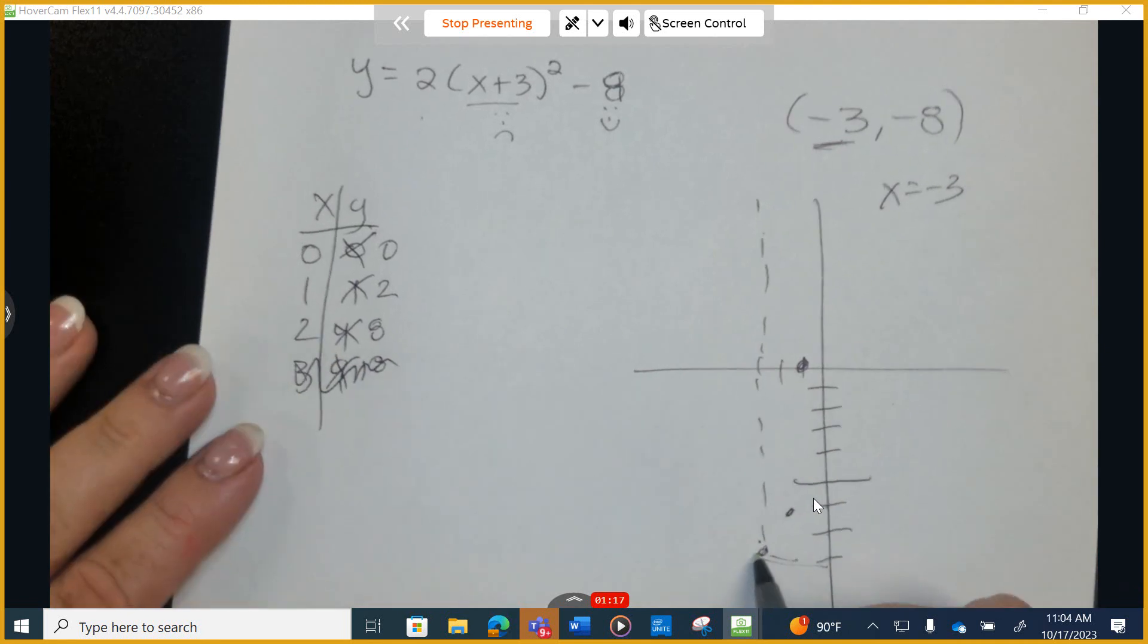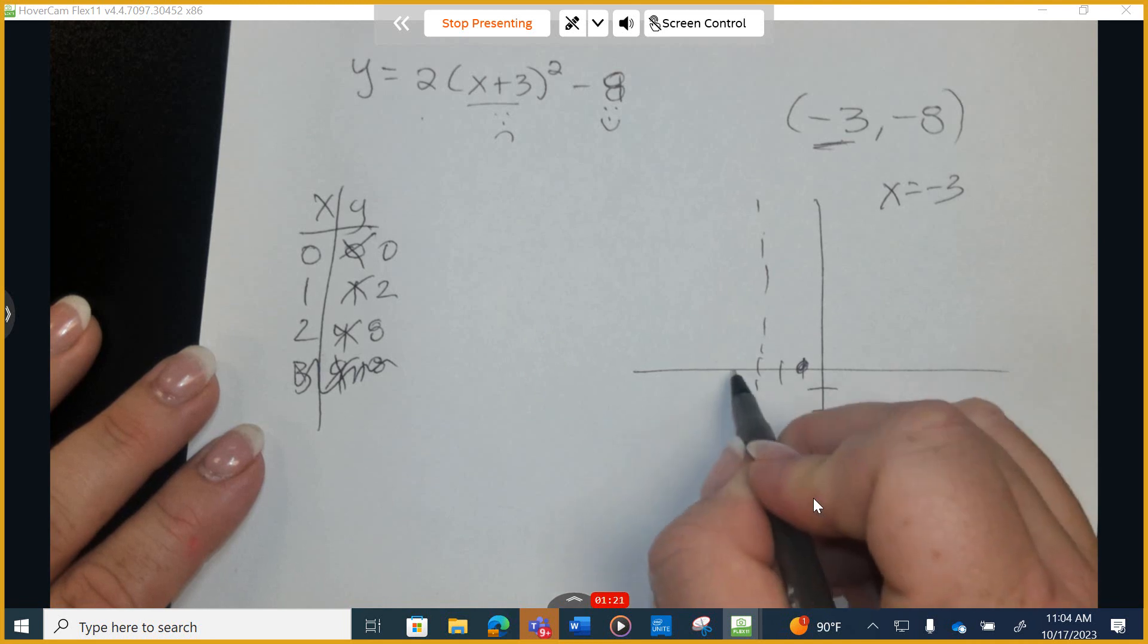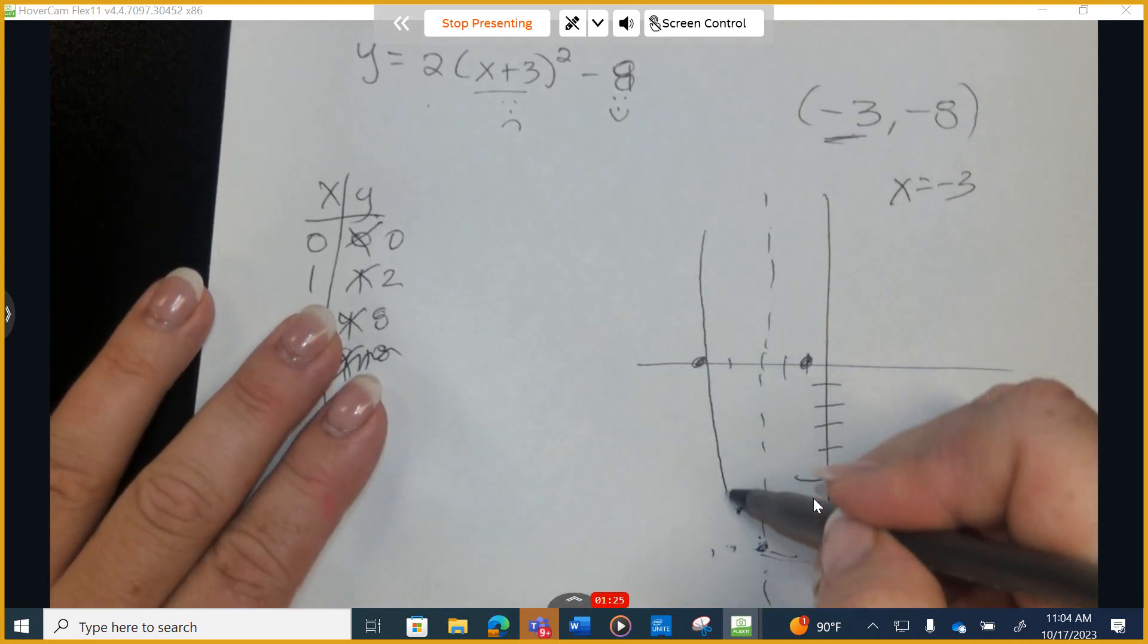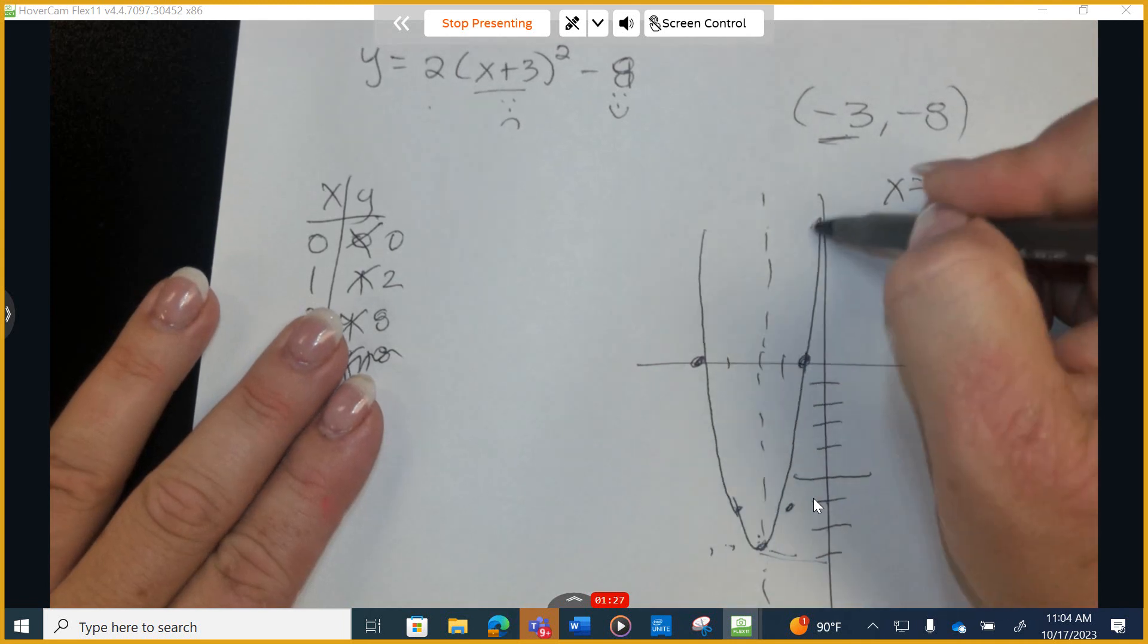And I'm not going all the way over. Then one to the left, two up, two to the left, and eight up. So here is my function.